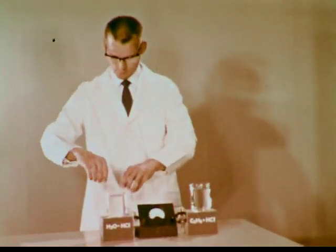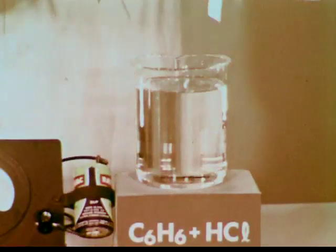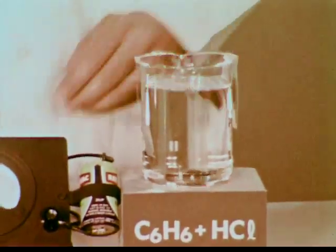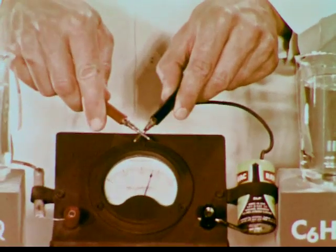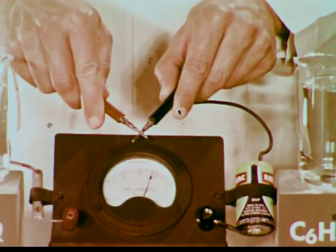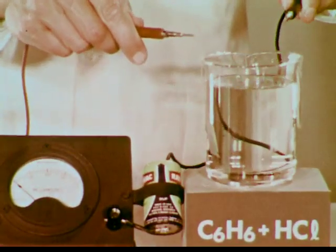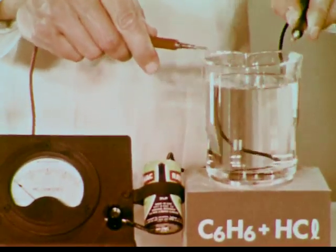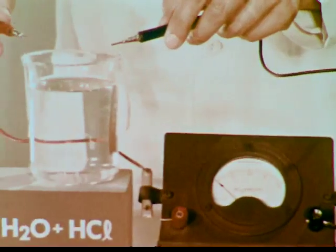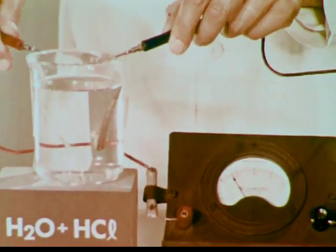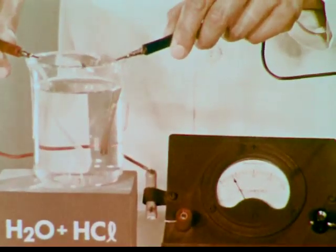We'll measure the conductivity of the two solutions, first placing silver electrodes in each beaker. Touching the probes causes a meter deflection, which indicates conductivity. However, the HCl in solution in benzene does not conduct appreciably. By comparison, HCl in water is a conductor. How do we account for this difference?